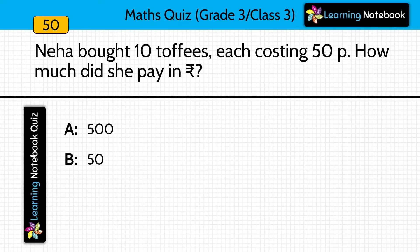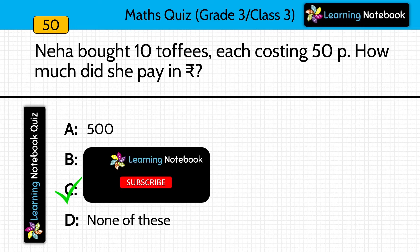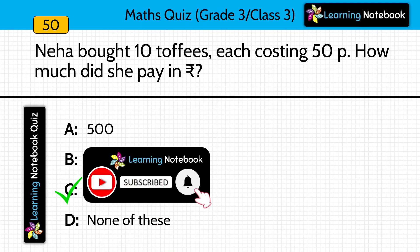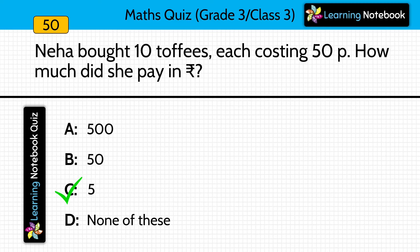Neha bought 10 toffees, each costing 50 paise. How much did she pay in rupees to buy these 10 toffees? Answer is option C, rupees 5. Because 10 into 50 paise equals 500 paise, and 500 paise equals 5 rupees.